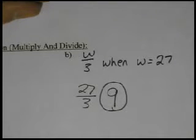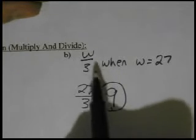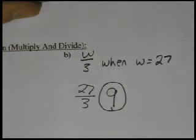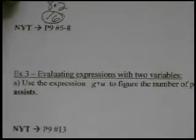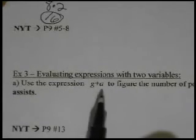Okay. So the last thing we have to look at is evaluating expressions with two variables. So far, all of our problems have had one variable, just a W. But what happens if we have, for example, example 3 here, two variables. Here it says, use the expression G plus A. Notice there's two variables.